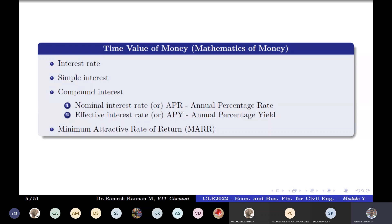Say someone borrows 1000 rupees from you now, and repays at a simple interest of 10% annually. After five years they pay you 1500 rupees. The 500 rupees of interest after five years may not be a very large sum. That is why the distinction between nominal interest and effective interest matters.